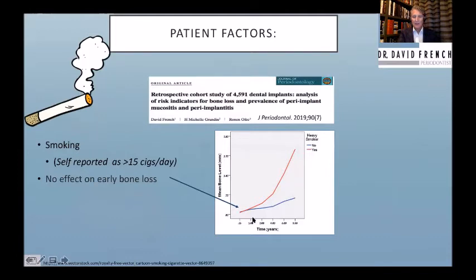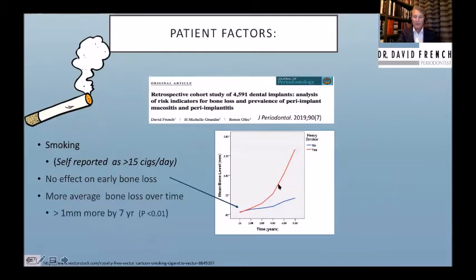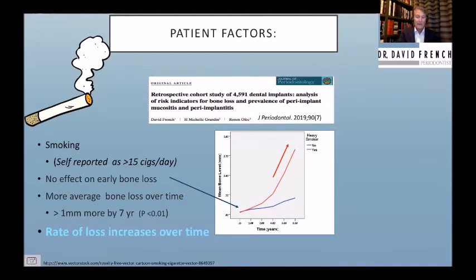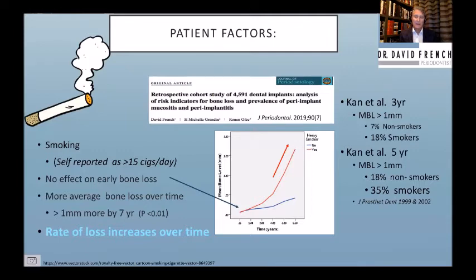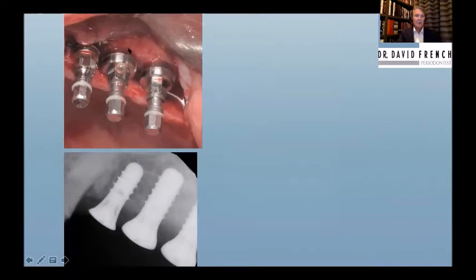We considered only heavy smokers, pooling light smokers with non-smokers. Early data showed no change in bone loss from placement to stage two — same as a non-smoker, the implant healed. But over time there was more bone loss, and the rate increases — the slope steepens. Can has also shown that about a third of implants lost more than a millimeter of bone over time. You can place implants in smokers and be successful in the first few years, but they will get peri-implantitis at a much higher rate. That must be part of your informed consent, or better yet work hard to get them to non-smoking or light smoking.